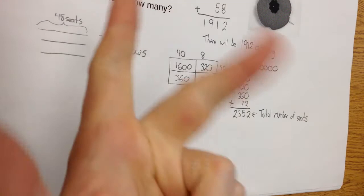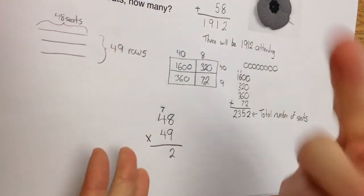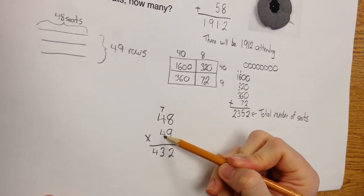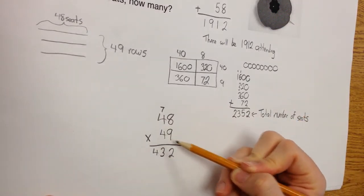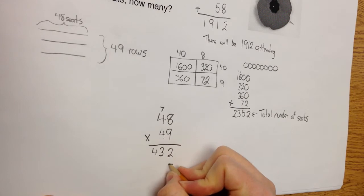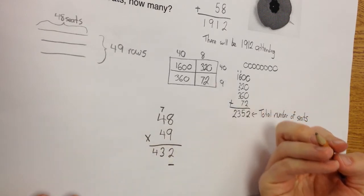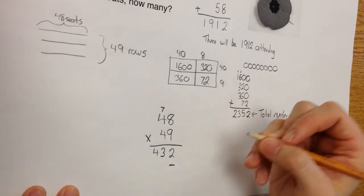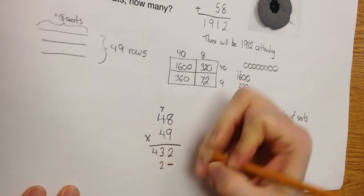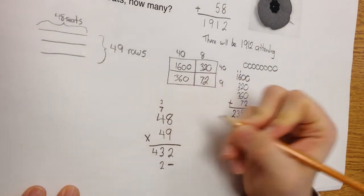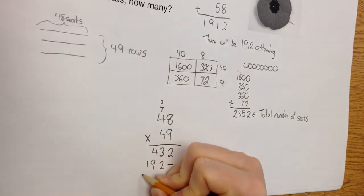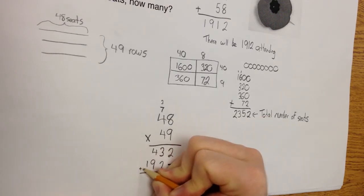Now, I'm moving on to my 10s column. What we need to do is we need to make sure we just put a place marker here so we don't put anything down. You can put a 0 if you want, which a lot of people do. Now I'm going to do 4 times 8. 4 times 8 is 32. 4 times 4 is 16. 16, 17, 18, 19.